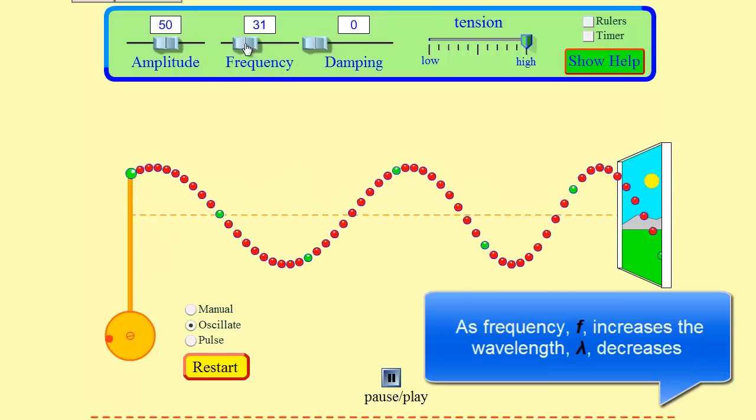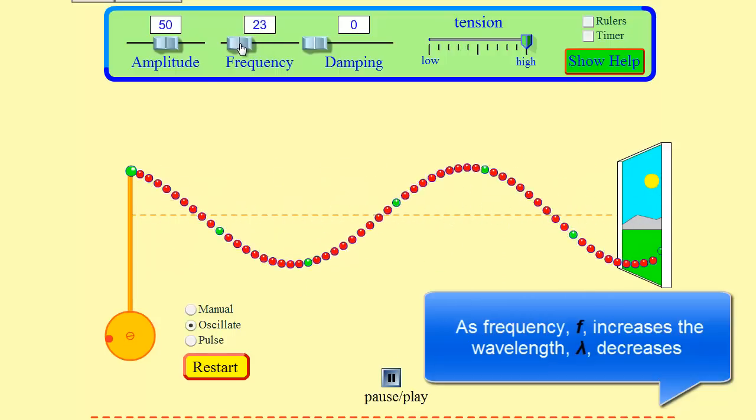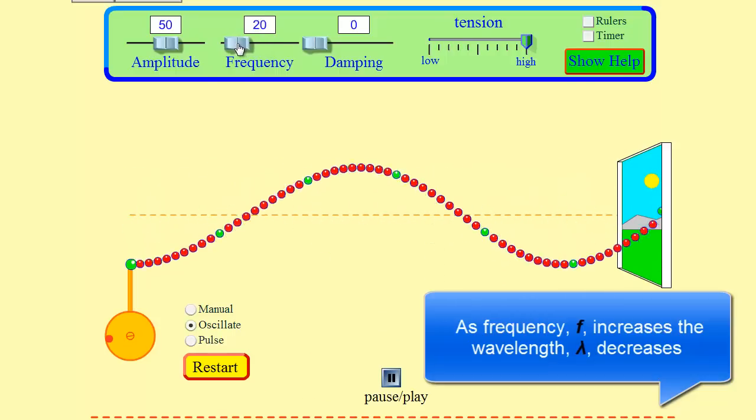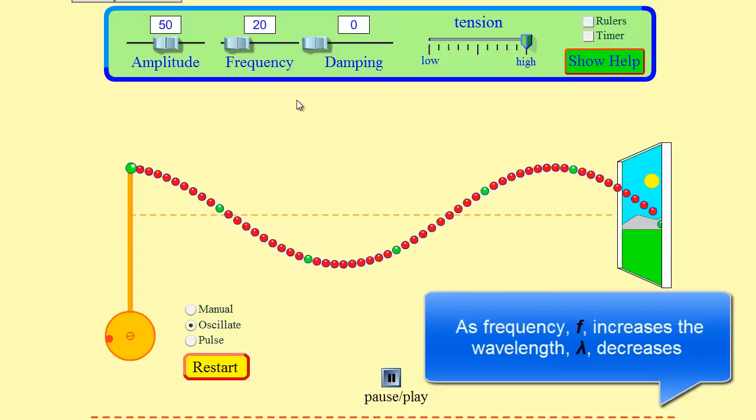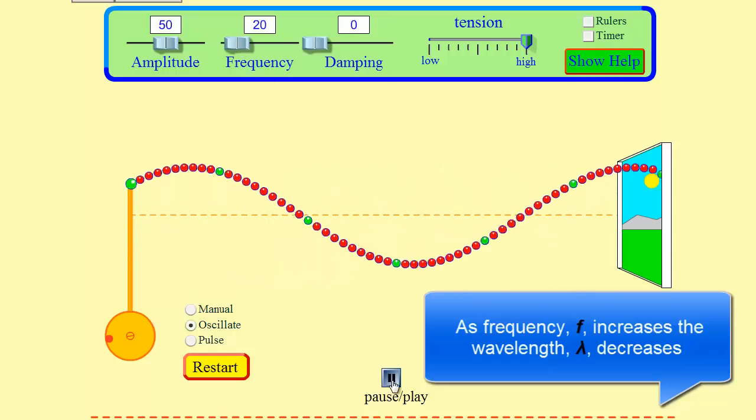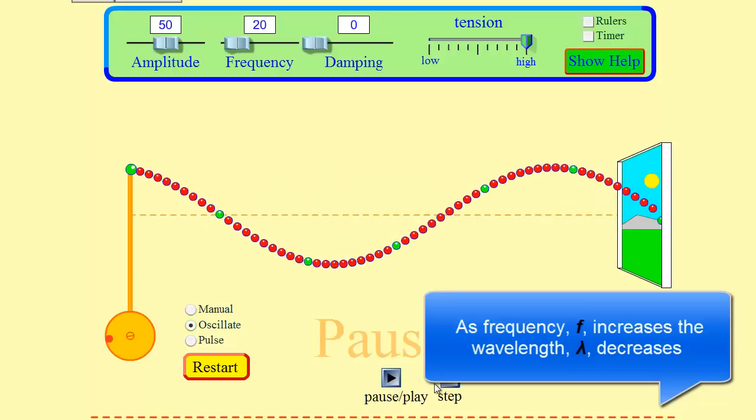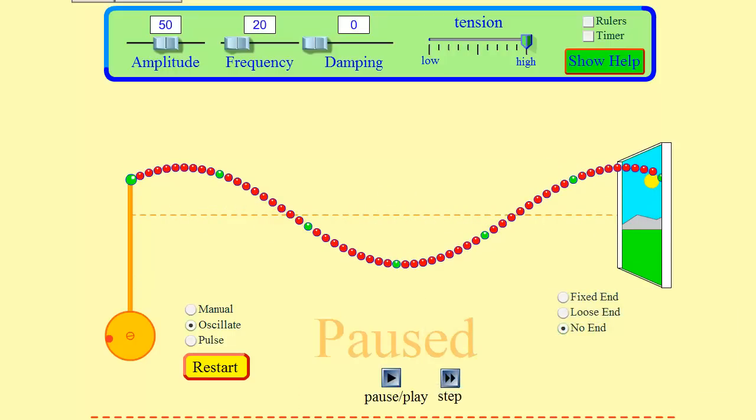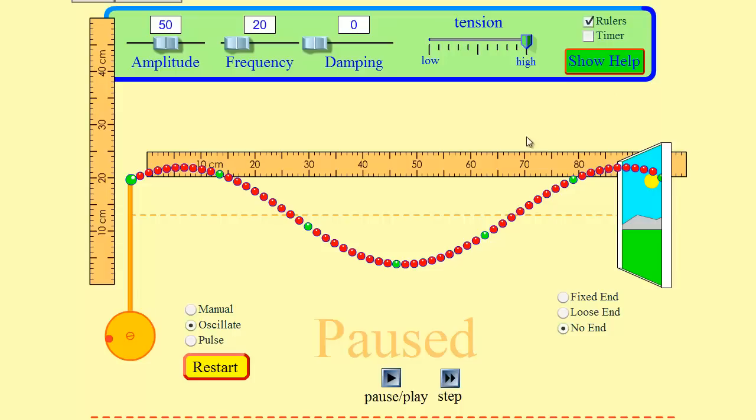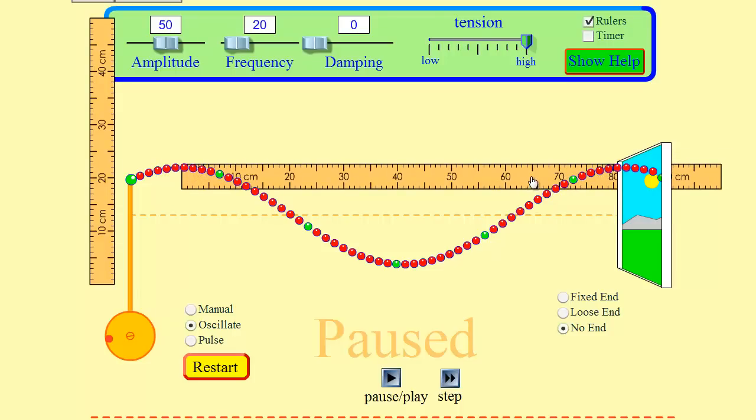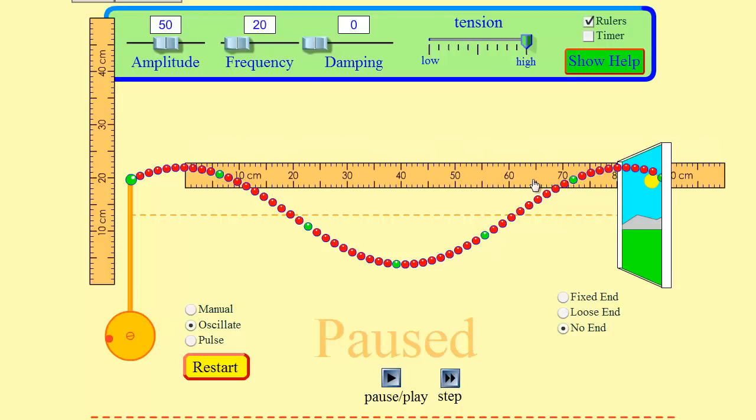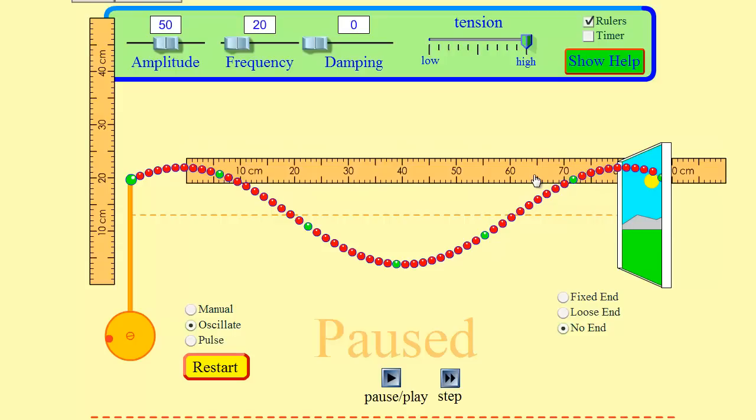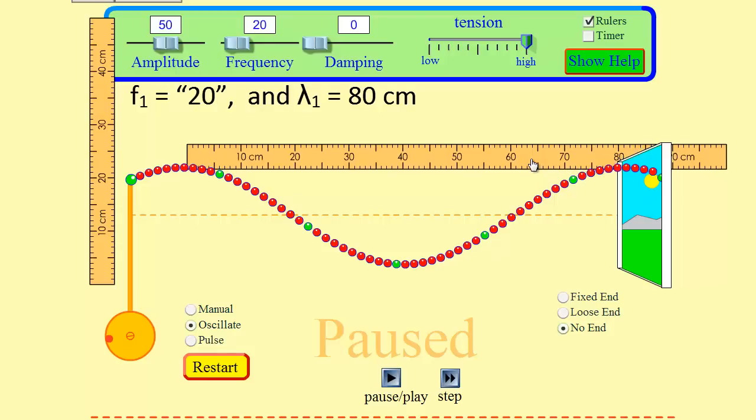Now if I choose a frequency of, let's pick 20. Okay, so there's a frequency of 20 and I'm going to pause it. I'll step it through so we see one full wave, two crests. Now I'll grab a ruler and with a frequency of 20, from crest to crest is one wavelength and we can see that it's roughly 80 centimeters. From here to here is roughly 80 centimeters.